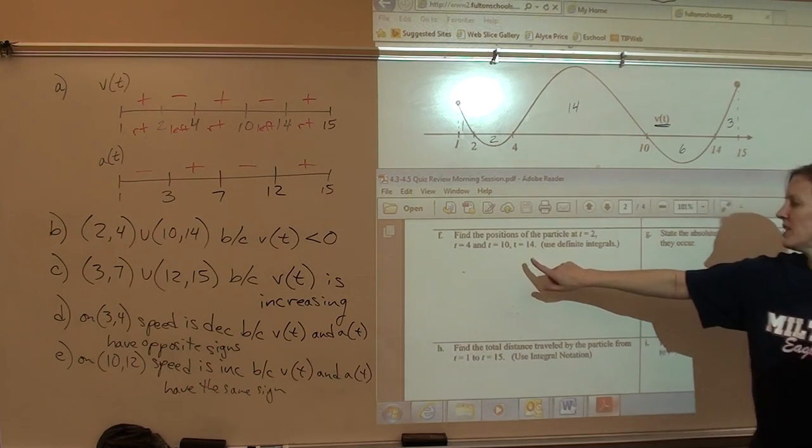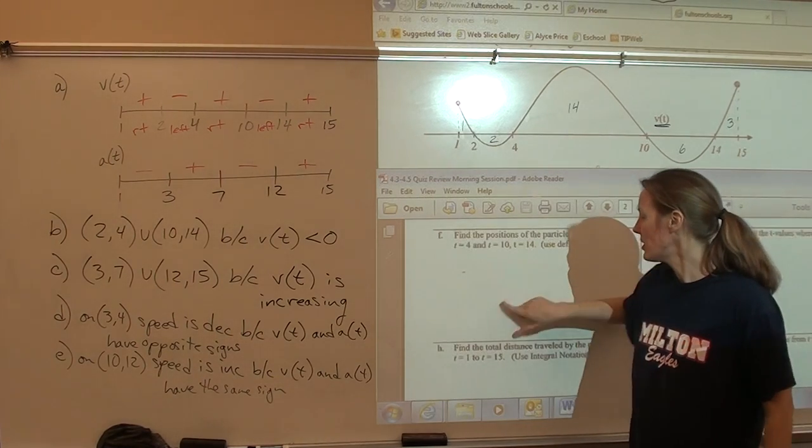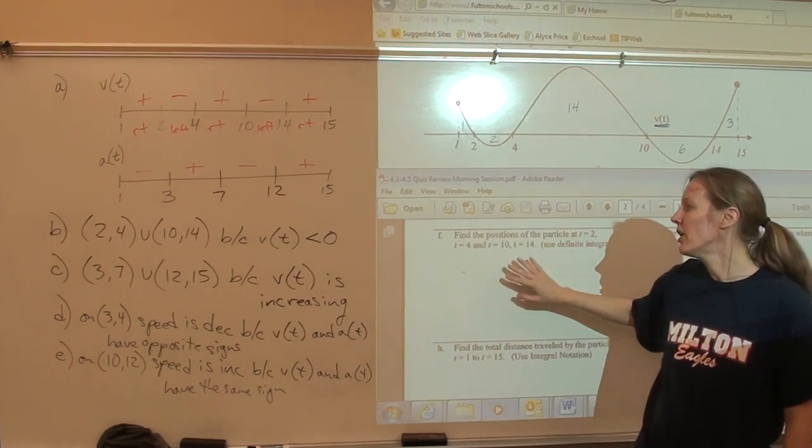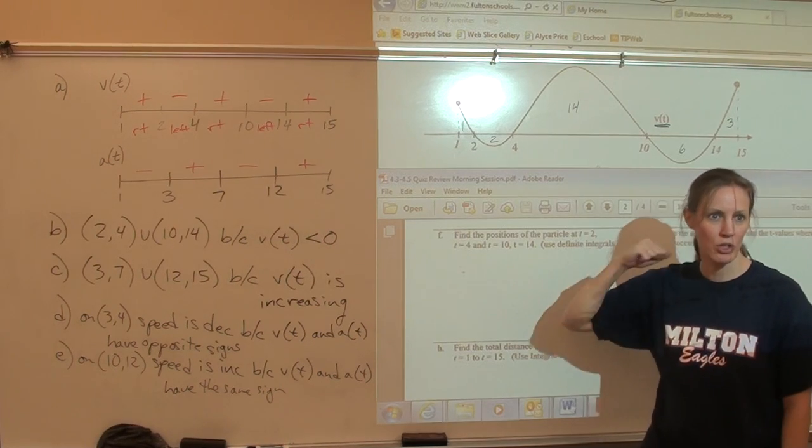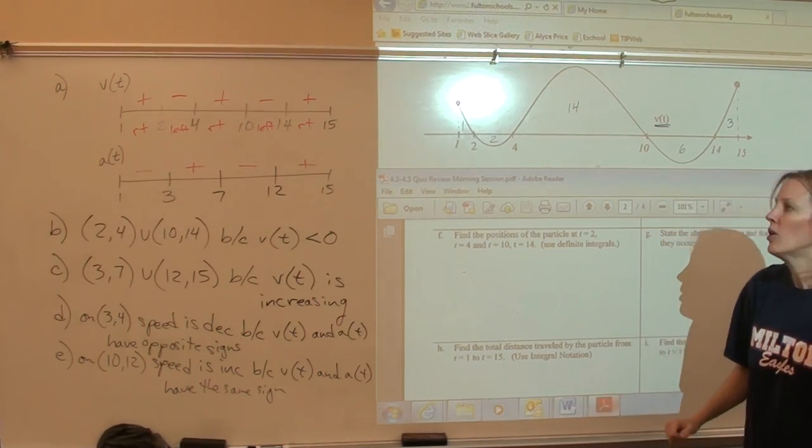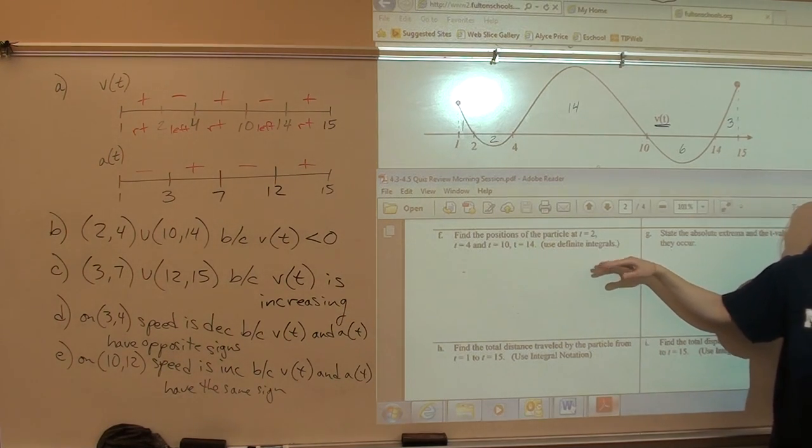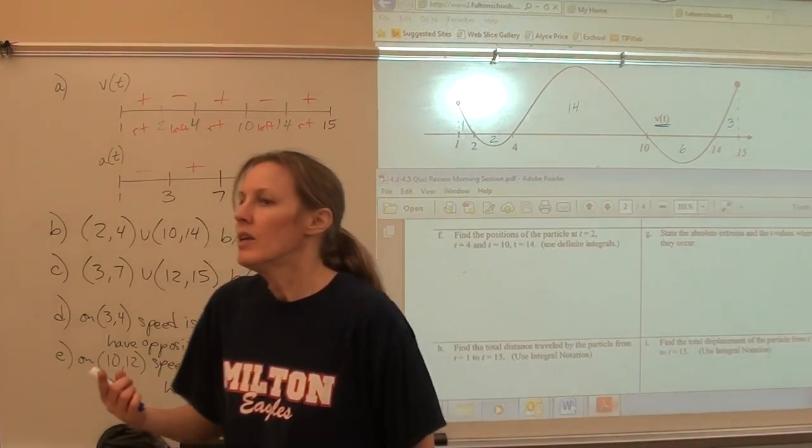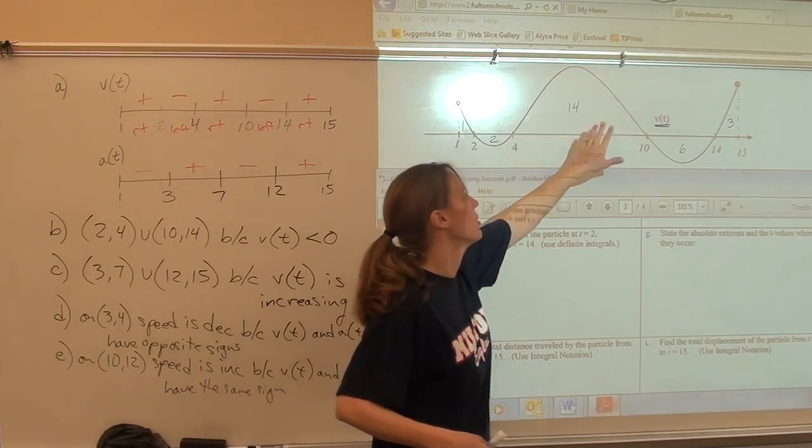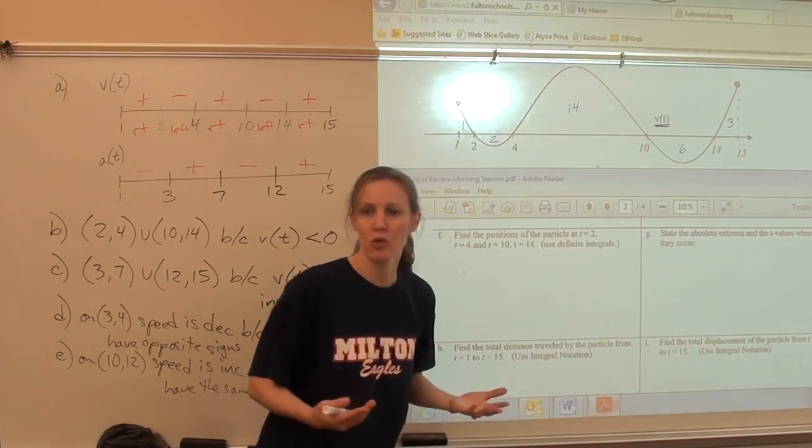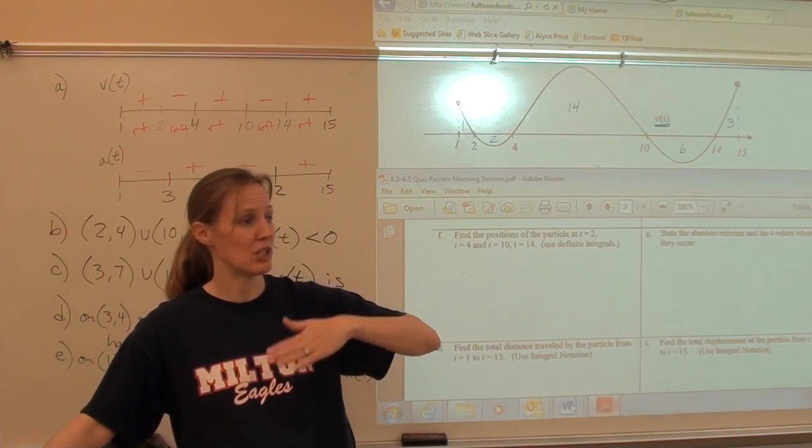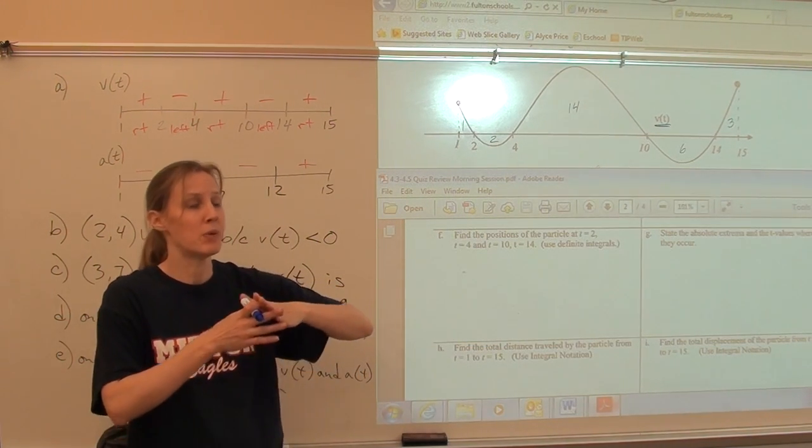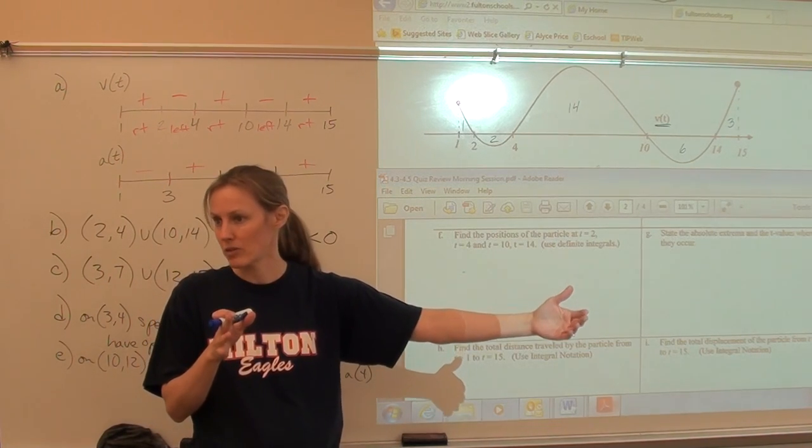So, for F, this is the tricky one. There's an easy way to find these answers, and then there is a slightly harder way, but the slightly harder way shows real math justification. This says you have to use definite integrals, so we have to do it that way. But I'm going to walk you through the quick way, just so you have an understanding of what's going on.